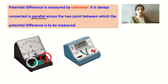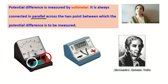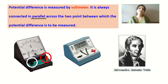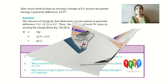Alessandro Antonio Volta, the great Italian physicist, was the one who invented the electric battery. Volta was performing electrical experiments at just 18 years of age, and his invention of the battery in the year 1796 revolutionized the use of electricity. To honor his great work in the field of electricity, the unit of potential difference is given the name volt.